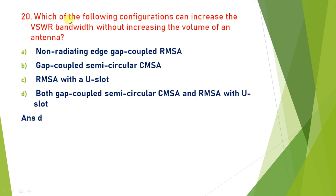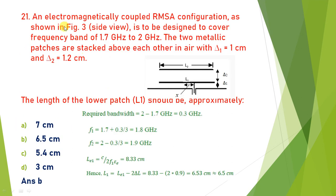Which configuration can increase VSWR bandwidth without increasing the volume of the antenna? Generally both gap coupled semi-circular CMSA and RMSA with U-slot increase the VSWR bandwidth. The answer is D.